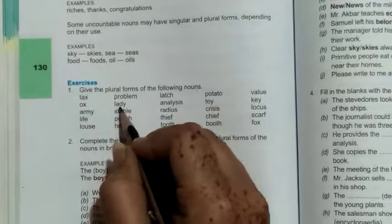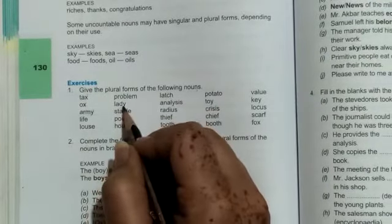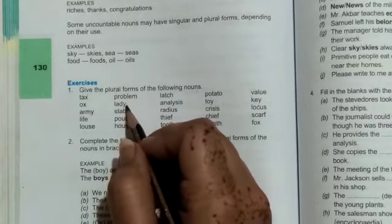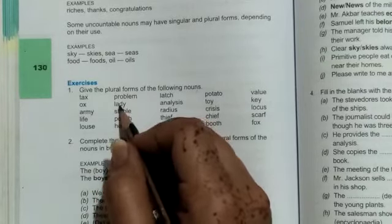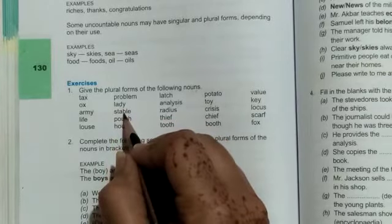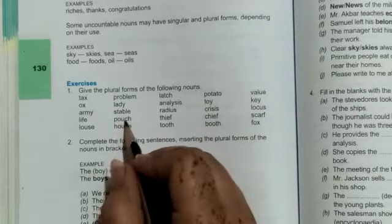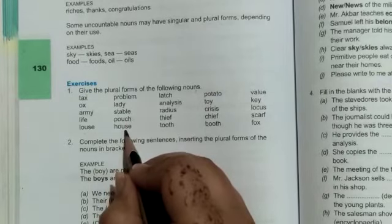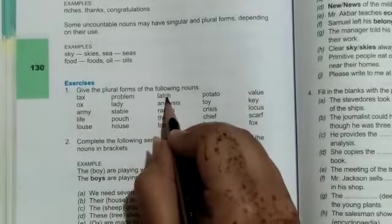Problem: problems. Lady: ladies. Whenever we have Y at the end of a noun or word it will be replaced with I-E-S so it becomes ladies. Stable: stables. Pouch: pouches by adding E-S at its end. House: houses. Latch: latches.